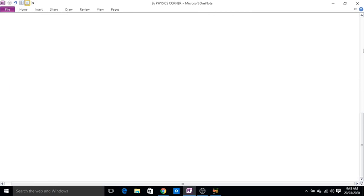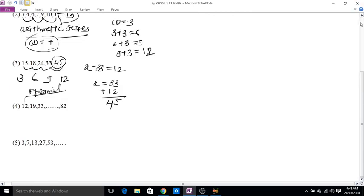Fourth example: 12, 19, 33, and the next term, in between 33 and 82. Using the common difference: 19 minus 12 equals 7, 33 minus 19 equals 14. Now something minus 33 - the pattern is 7 into 2 equals 14, 14 plus 7 equals 21. Therefore x equals 33 plus 21, which is 54.